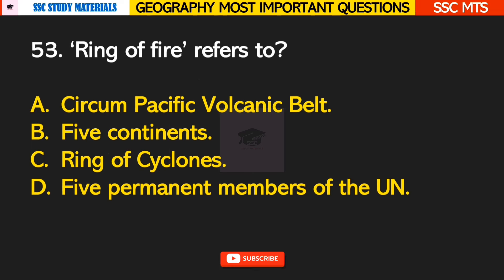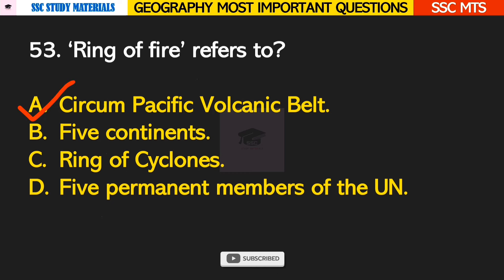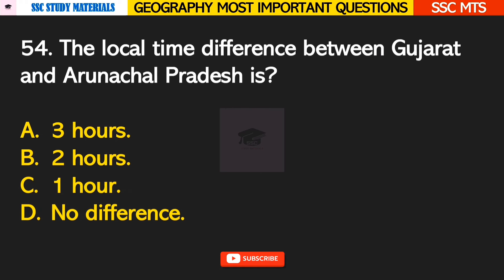Question number 53: Ring of Fire refers to? Answer A — it refers to the circum-Pacific volcanic belt. Question number 54: the local time difference between Gujarat and Arunachal Pradesh is? Answer B — it is 2 hours.